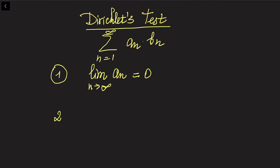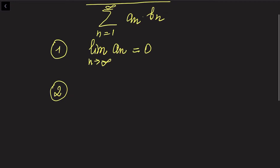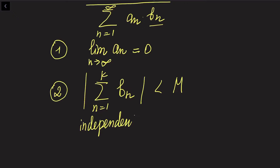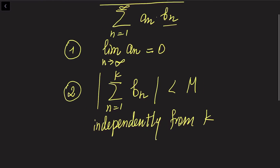The second condition tells us that the sum of a finite number of elements for bN should be bounded. Basically, we take the sum of k terms for the second series bN, when n goes from 1 to k, and this sum should be bounded — whenever you sum this in its absolute value, it is going to be less than some finite number M, independently from k. So no matter what k is, it should always be less than M. We are going to use this test to check the convergence of our series.